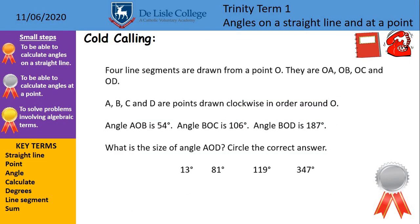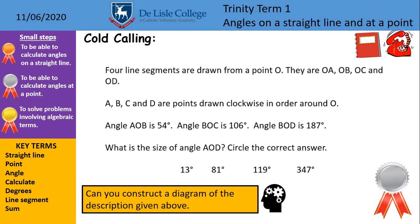Now this is a particularly difficult question, and on the next slide I will show you what the drawing would look like, but this brings a lot of things we've done together. Four line segments are drawn from a point O. They are OA, OB, OC, and OD. A, B, C, D are points drawn clockwise in order around O. And then it tells you the angles of three of them, and then asks you to work out the size of the angle AOD. And there are four possible answers there. Obviously just one of those is correct, so you will need to draw that diagram and then work out, again, rather than measuring, you're going to work out what that angle would be.